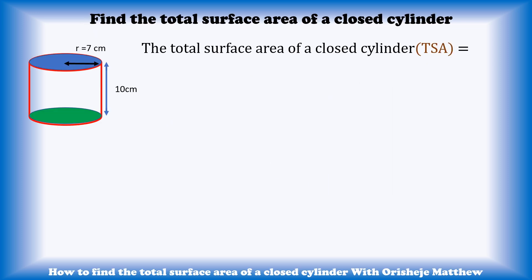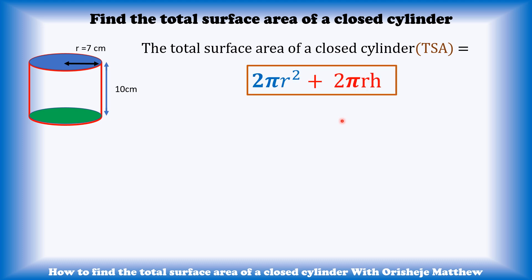So let's look at an example. We are going to find the total surface area of a closed cylinder with a circular radius of 7 cm and a height of 10 cm. So what is the total surface area? The formula for the total surface area (TSA) of a closed cylinder is 2 pi r squared plus 2 pi r h.